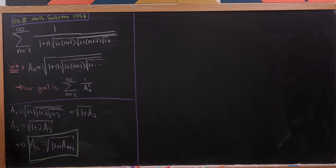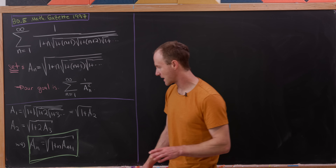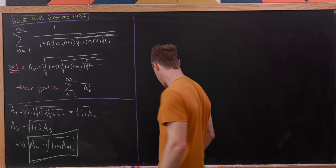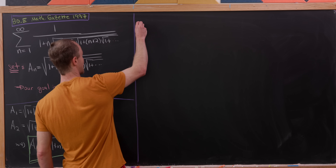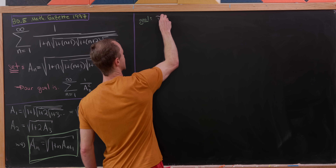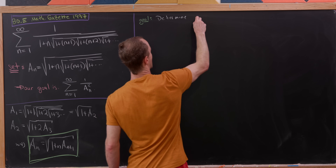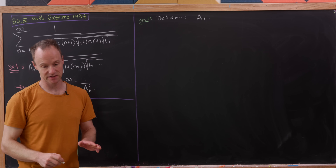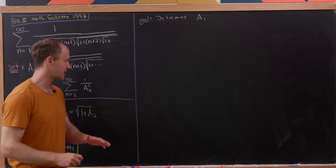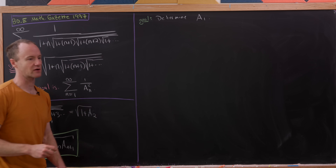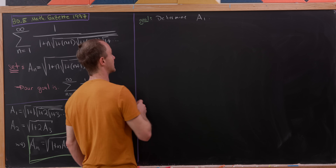Before we can use that recursion, we'd like to determine a nice formula for this A sub n sequence. Since we have a recursion, let's try to find a formula by first finding A sub 1 — that's our sub-goal. To do that, I'm going to define a sequence that converges to this infinitely nested radical, because that's really what we mean by the infinitely nested radical.